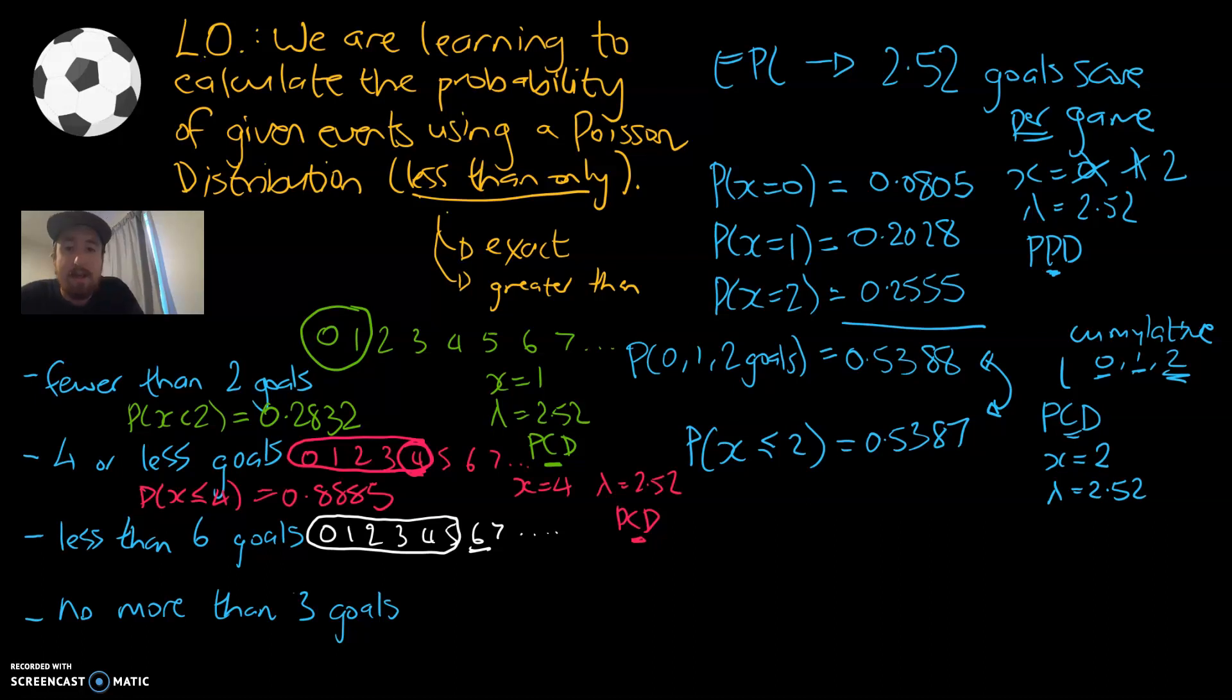What that tells us is x is going to be equal to five, because five is the greatest number in the circled area. Lambda will be 2.52. We are adding together multiple numbers, 0, 1, 2, 3, 4, 5, so we're going to be using or continuing with PCD mode. I'm going to put five into my calculator. That means the probability of seeing less than six, and key thing is I haven't included that equal to part, because we don't want to include six, is 0.9566, rounded to 4DP again. Most likely, we're going to be seeing less than six goals.